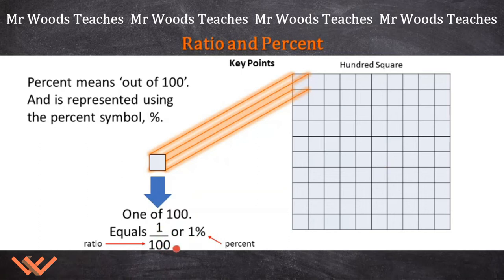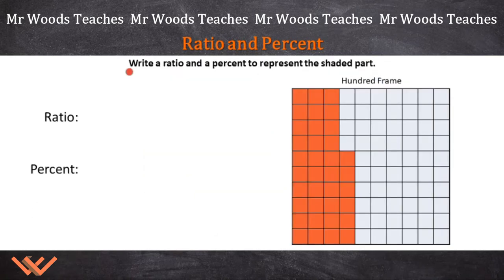Now there are other ways to represent this ratio, but that'll be in a later video. Here it reads: write a ratio and a percent to represent the shaded part. We have this hundred frame, and it's labeled, so we know it's a hundred squares. That means it's 10, 20, 30, and then count this: one, two, three, four, five, six.